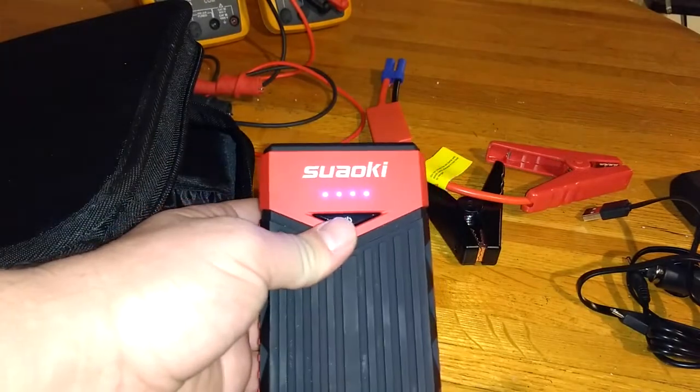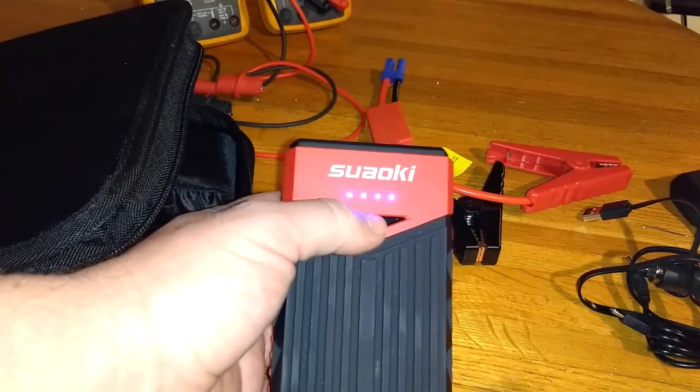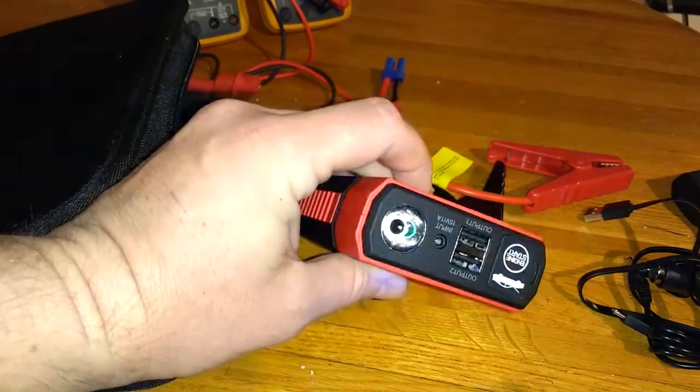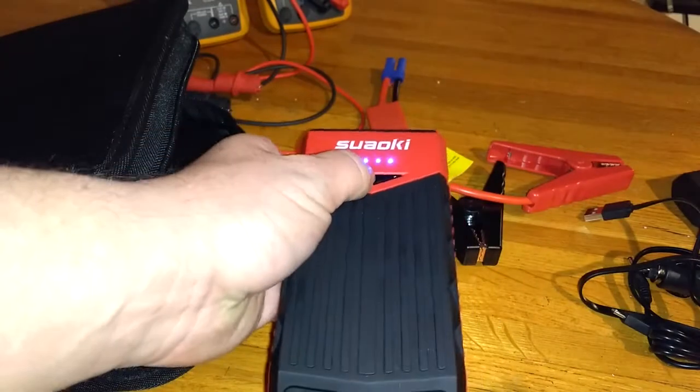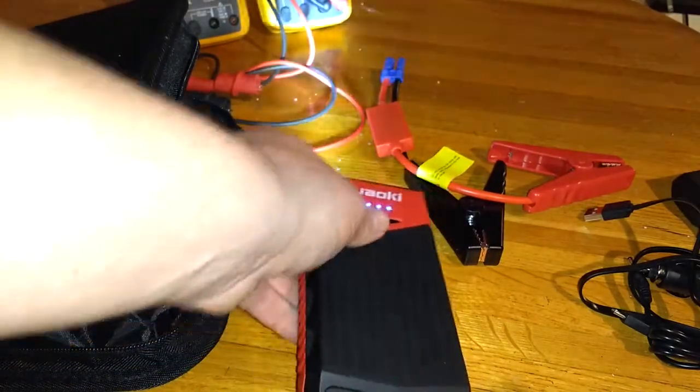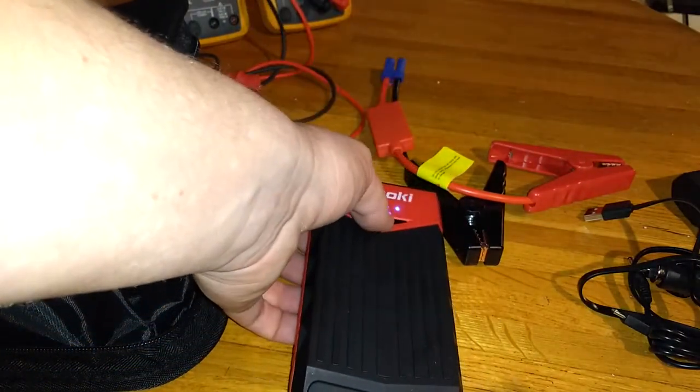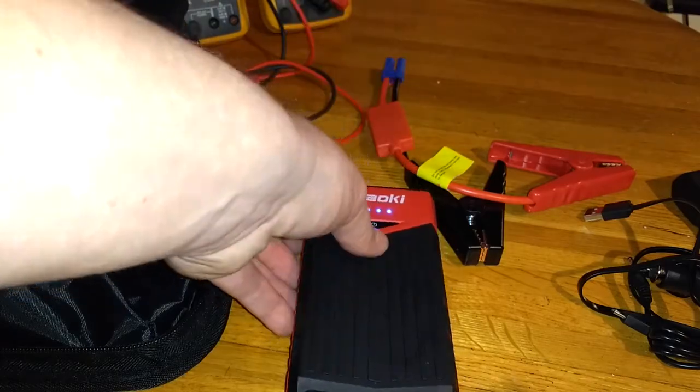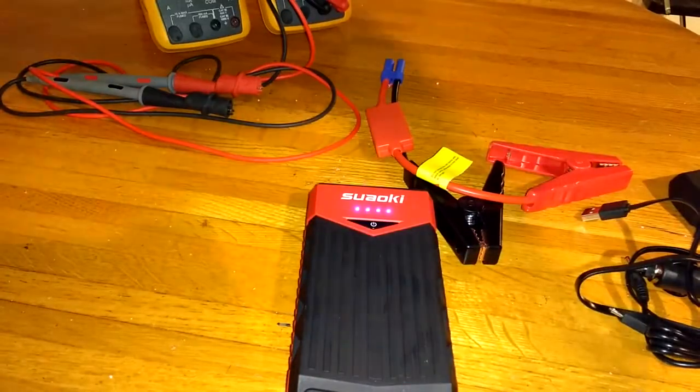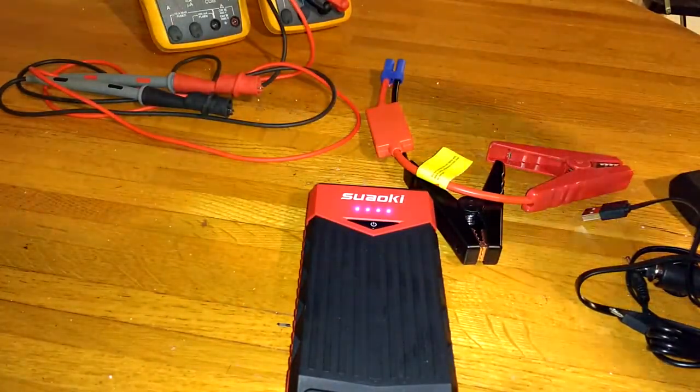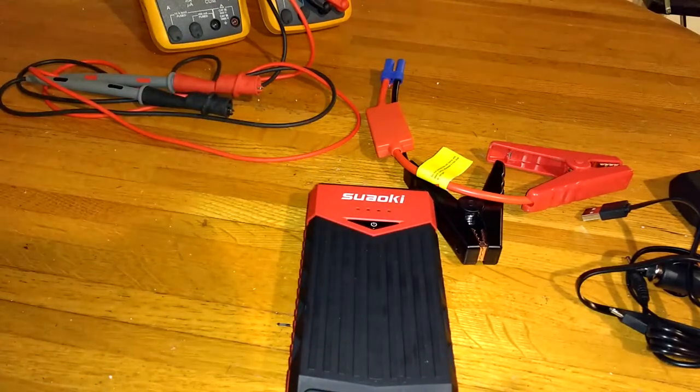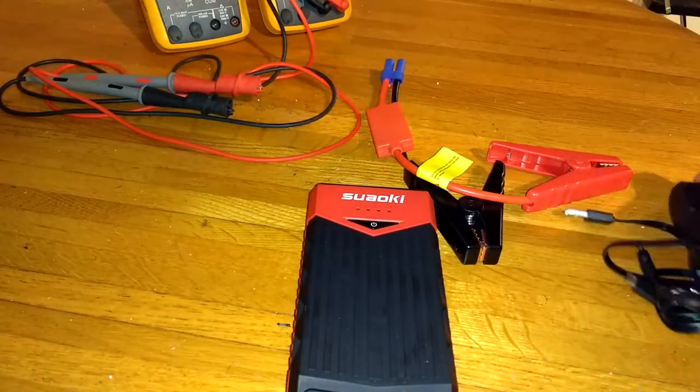When you turn it on it's got the indicator lights to tell you that it's full, and if you hold it, it has a flashlight and then a blinking strobe light. It also comes with the whole carrying case to put everything in. I got this off of Amazon on a deal for $36.